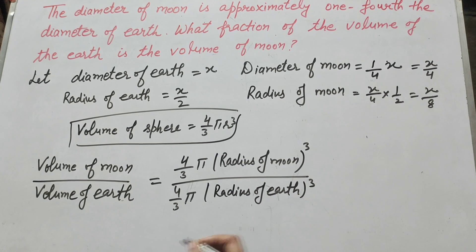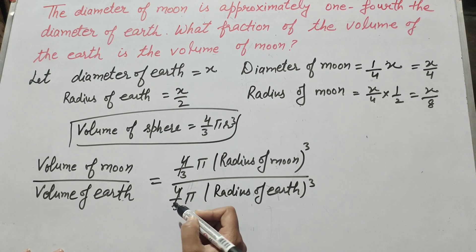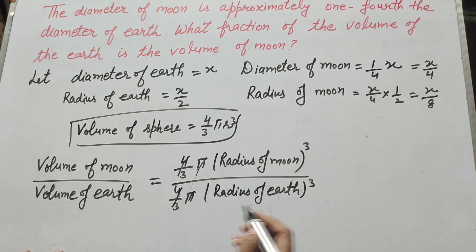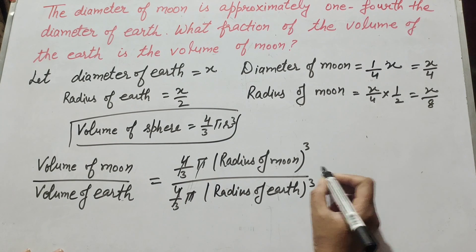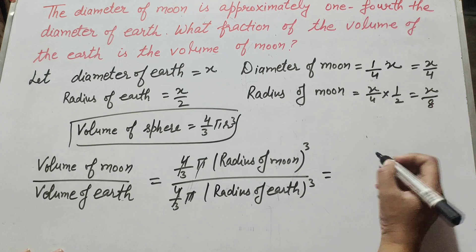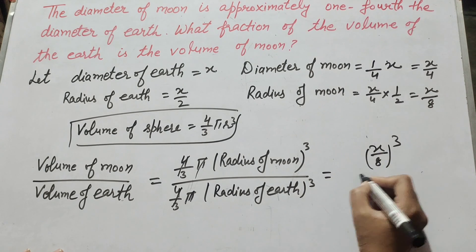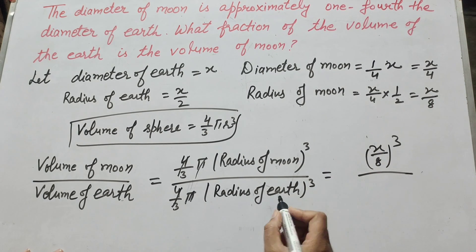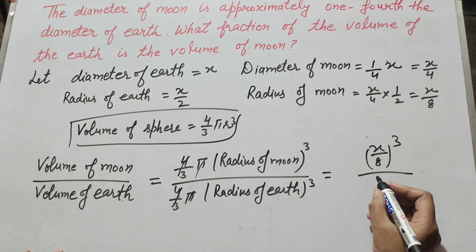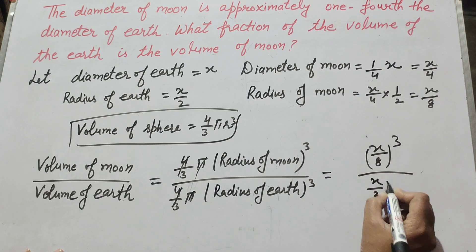The 4 over 3 in the numerator and 4 over 3 in the denominator both cancel. Pi in the numerator and pi in the denominator both cancel. We are left with radius of moon cubed, which is (x over 8) cubed, over radius of earth cubed, which is (x over 2) cubed.